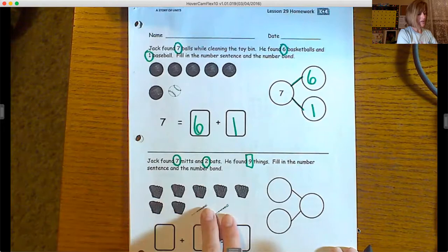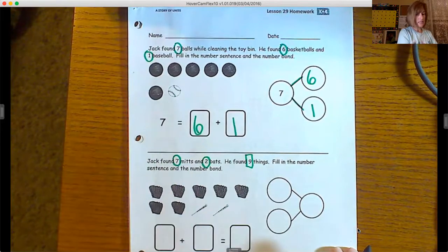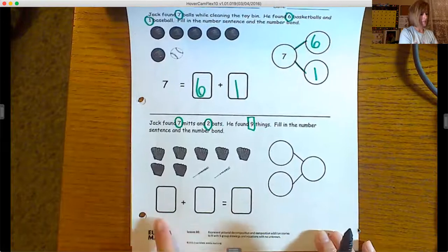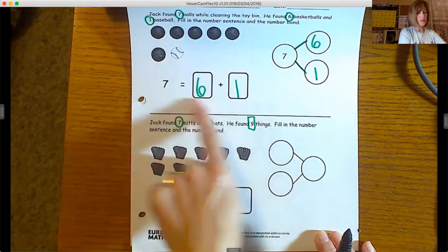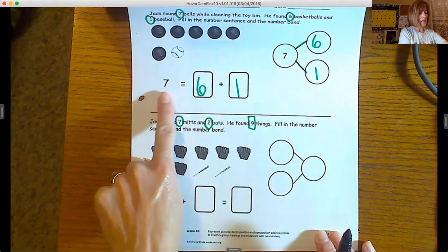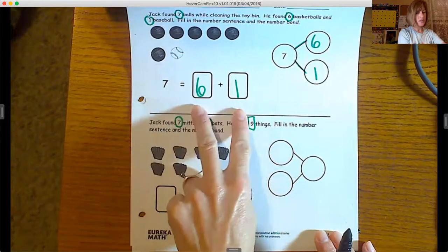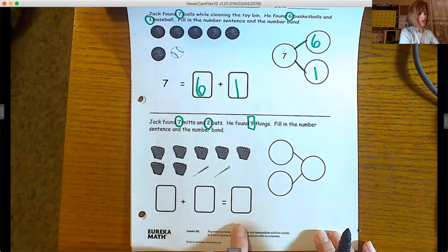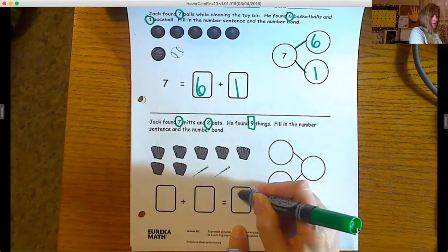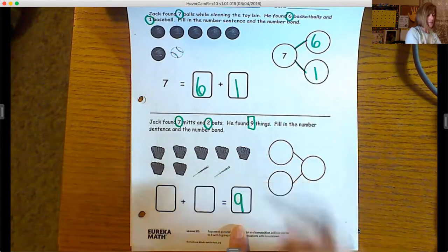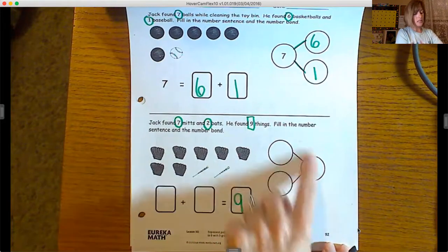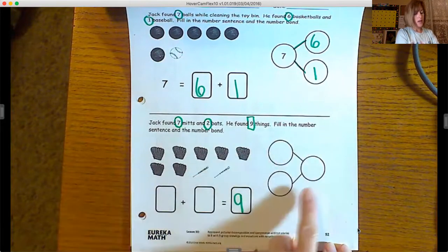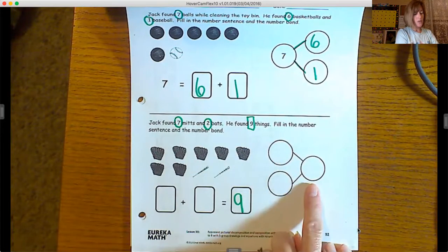Now this sentence down here—it's a little different than up here. Up here it had the whole number equals the two parts. Down here we have the two parts equals the whole number. So I'm going to put the whole number here for you to help you out a little bit. I'm going to let you do the number bond on your own. This is where we put that whole number. This is where we put the parts.